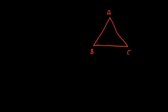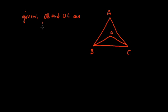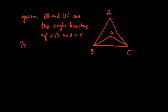There is a bisector OB of angle B and a bisector OC of angle C. OB and OC are the angle bisectors of angles B and C. We have to prove that angle BOC is equal to 90 degrees plus half of angle A.